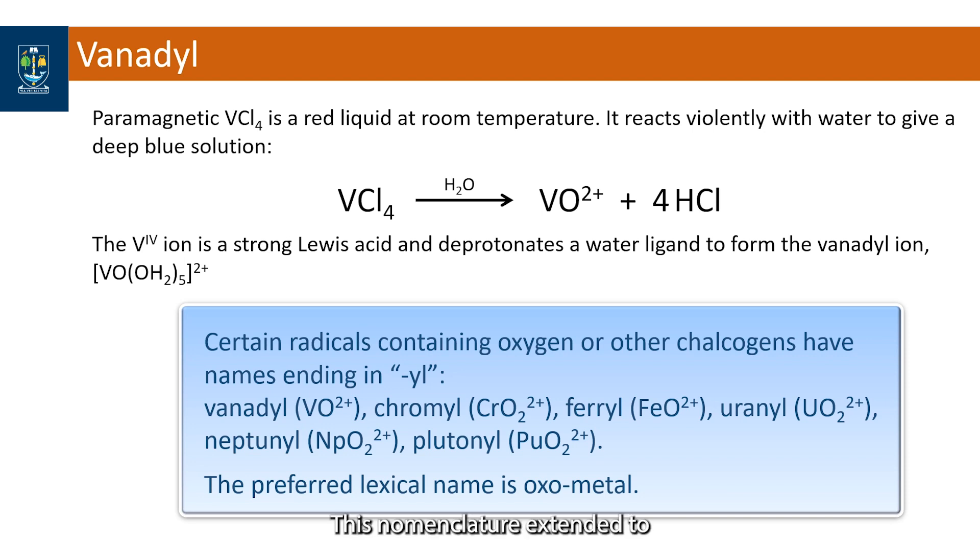This nomenclature extended to actinides with two oxo ligands like uranyl, neptunyl and plutonyl. Although the preferred name is oxo metal we still use the old version.